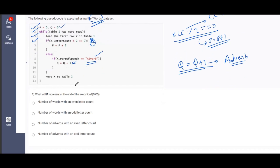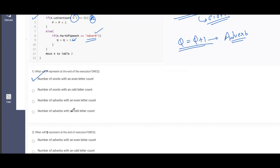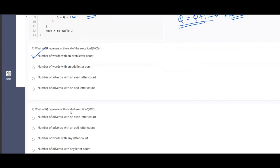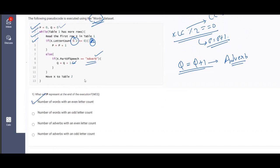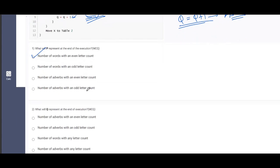So now let us find out the most suitable answers as discussed. First, what will P represent at the end of execution? We have seen that P represents the number of words with an even letter count. Right. What will Q represent at the end of execution? Please observe here that Q is only concerned with adverbs.